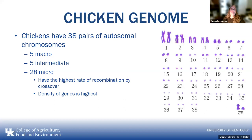Chickens have 38 pairs of autosomal chromosomes. Of those 38 pairs, five are considered macro chromosomes — meaning they're very large. They have 28 micro chromosomes, which are very small, but they have the highest rate of recombination by crossover and, although smallest, the highest density of genes. There are also five intermediate chromosomes with regards to size.